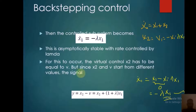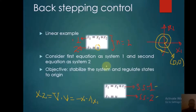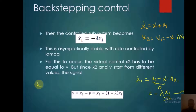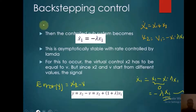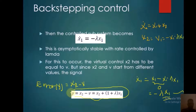There is an error between x1 and v, the virtual input. The third step is computing the error signal. We define the error y, where y is equivalent to x1 and x2 minus v. Here v is the virtual input, so we substitute the value of v. As you can see, y is equivalent to x2 minus v.